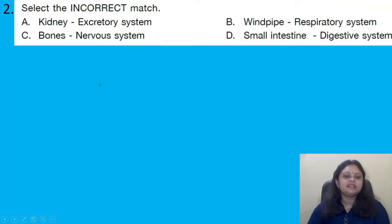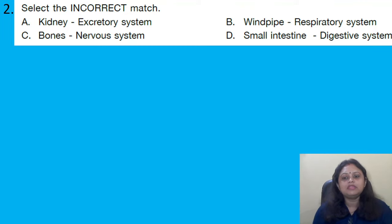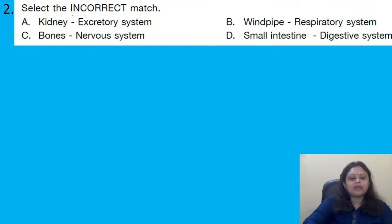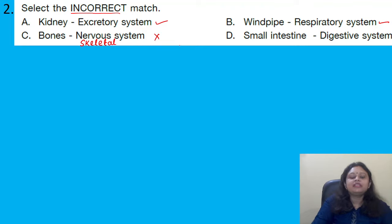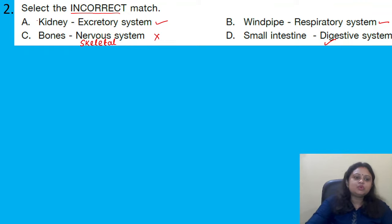Select the incorrect match. Option A: kidney – excretory system. B: windpipe – respiratory system. C: bones – nervous system. D: small intestine – digestive system. We have to find the incorrect match. Kidney belongs to the excretory system. Windpipe belongs to the respiratory system. Bones belong to the skeletal system, not the nervous system — so this one is incorrect. Small intestine belongs to the digestive system. So the correct answer is option C.